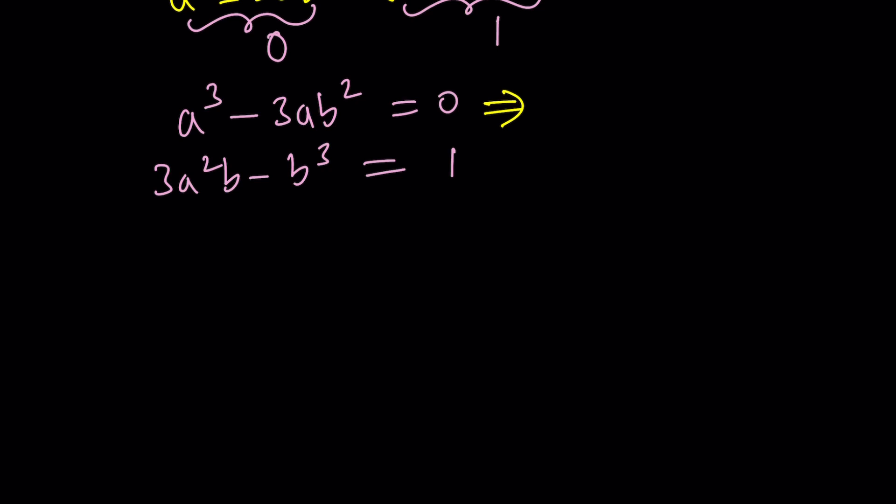Instead of that, let's do something else. First equation is actually fairly easy to handle. Factor out a. Yeah, this is much easier. The other method was just ridiculous. From here, we get two things, two results. Either a is equal to 0 or a² = 3b².